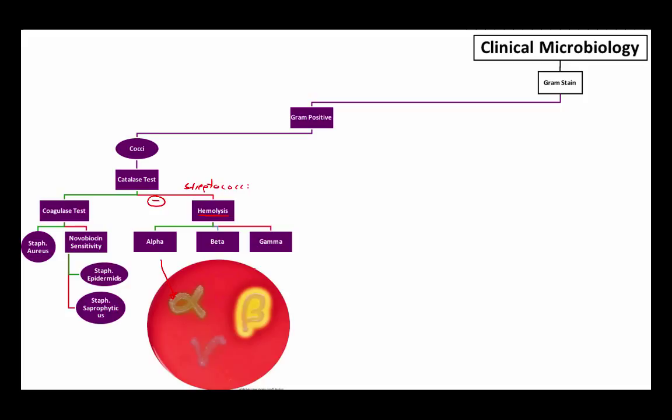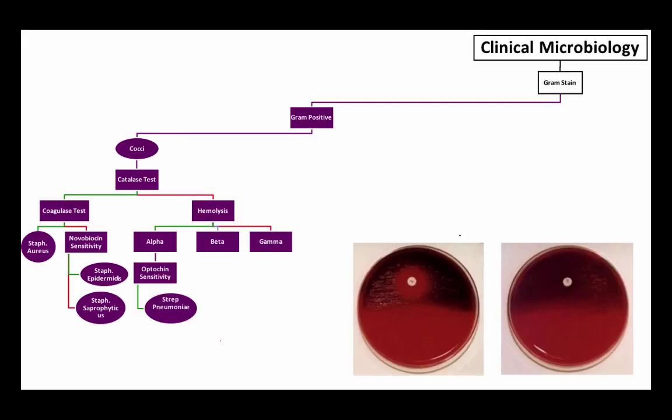Remember also that nitrites cause methemoglobinemia, and they're actually a treatment for cyanide because cyanide has a very high affinity for methemoglobin. I just wanted to say that beta hemolysis is this very clear, complete hemolysis. You're getting these clear colonies on a sheep's blood agar plate. And then finally, the gamma hemolysis is essentially non-hemolytic class of bacteria of the streptococci.